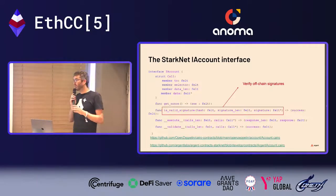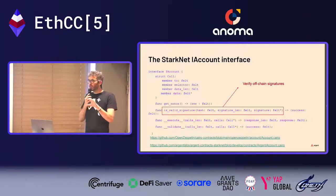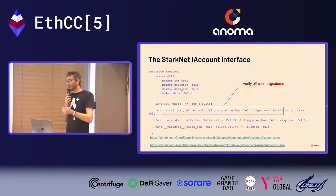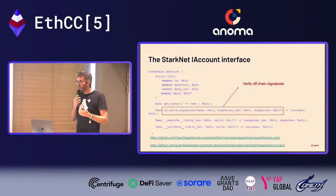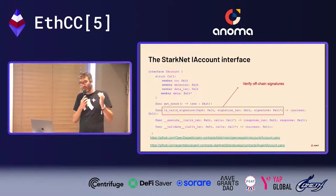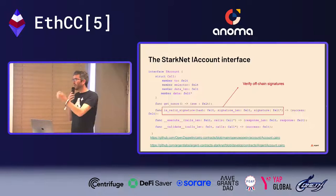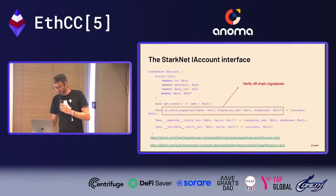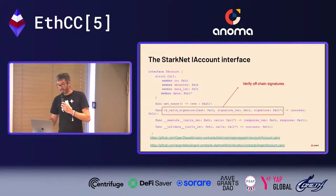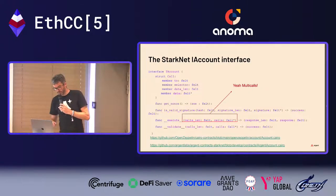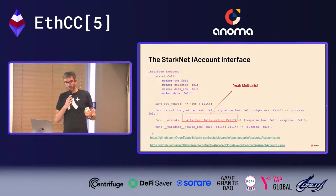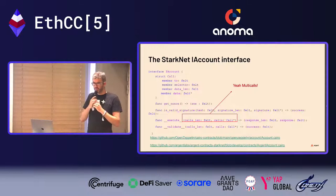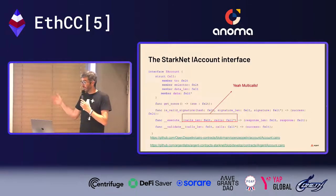There's a third very important method: verifying off-chain signatures. If your account defines its own validation logic, you can't verify off-chain messages like EIP-712 locally using ECRecover. The only object that knows whether a signature is valid is the account itself, so you need a method called isValidSignature — exactly EIP-1271 on Ethereum, but on StarkNet it will be part of every single account's interface.